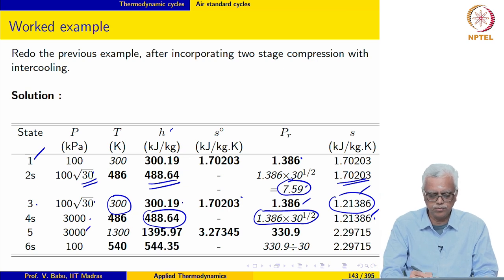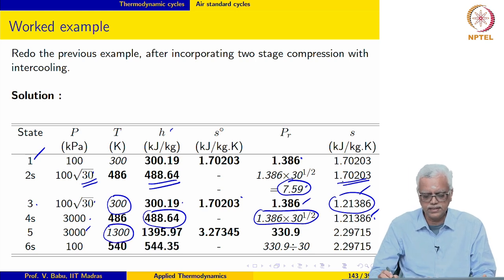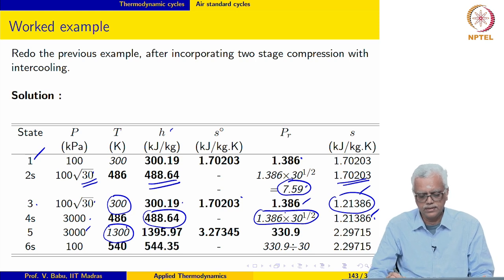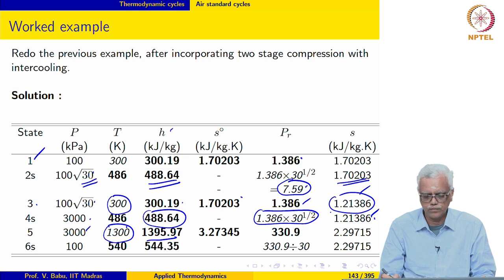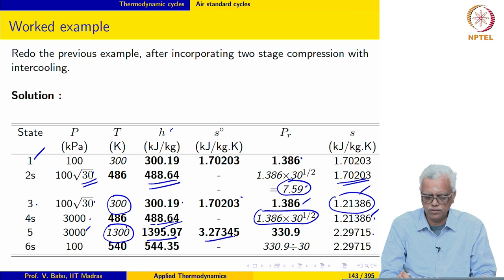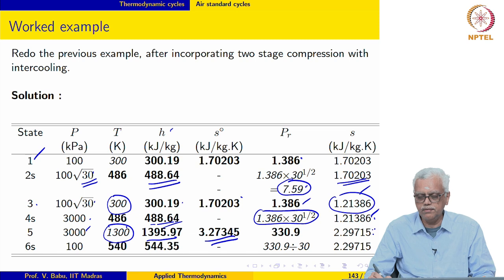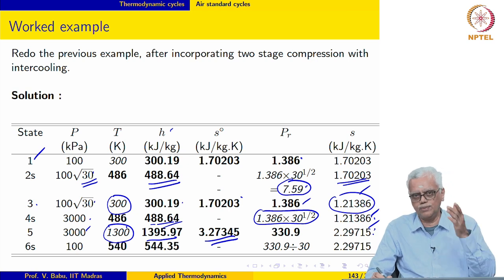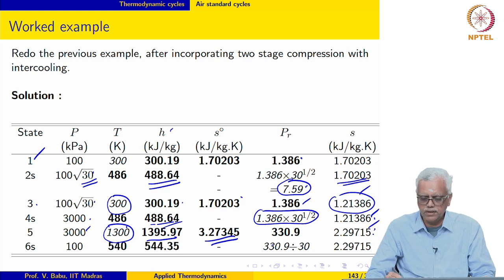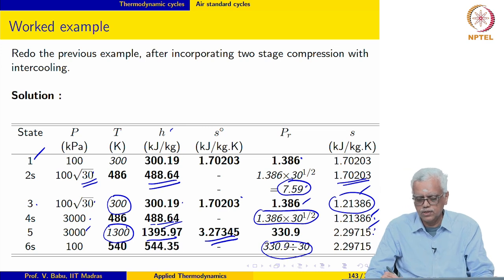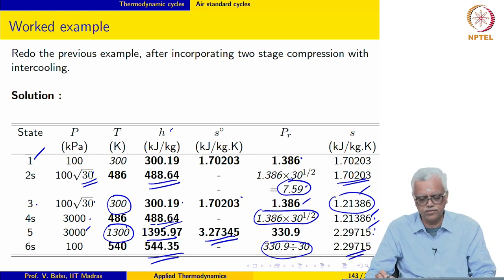At state 5, the end of the combustion process, we assume no pressure loss during heat addition and the temperature is given as 1300 Kelvin. We go to the air table and retrieve H and S0; the specific entropy at state 5 is evaluated using the entropy expression and comes out to be 2.29715. For the isentropic expansion from 5 to 6S in the turbine, PR_6S is 330.9 divided by 30 since there is no reheat and single-stage expansion. We retrieve H from the table; S need not be recalculated as 5 to 6S is isentropic.